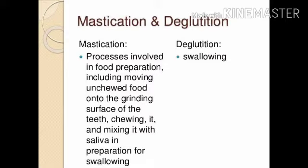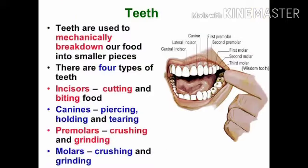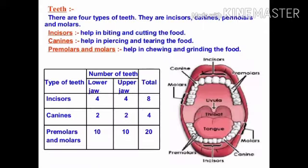Processes involved in food preparation include moving unchewed food onto the grinding surface of the teeth, chewing it, and mixing it with saliva. In the mouth, first mastication takes place, then the teeth chew the food and the salivary glands produce saliva which converts starch into sugar. There are basically four types of teeth: incisors, canines, molars, and premolars.